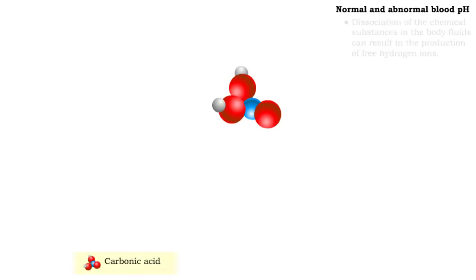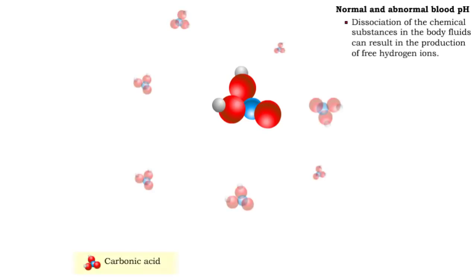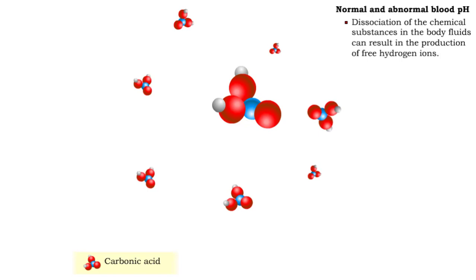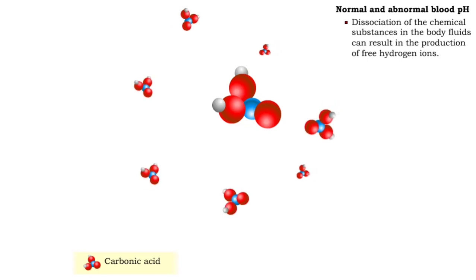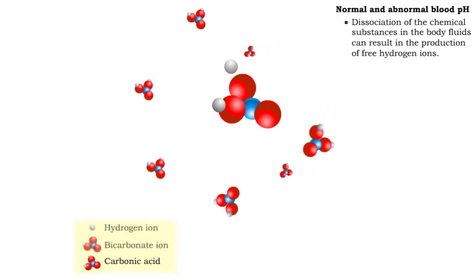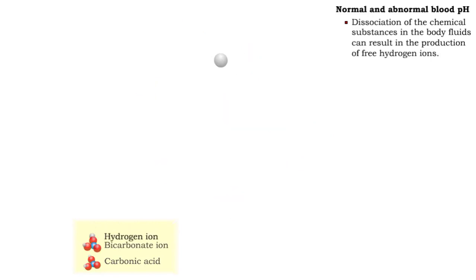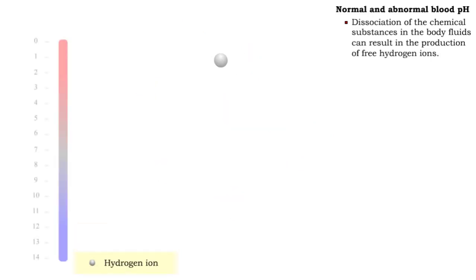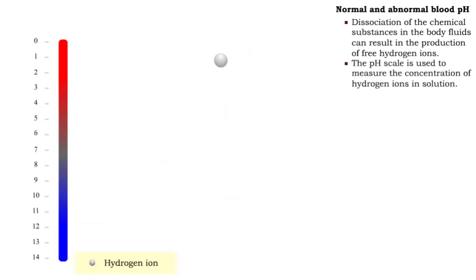Many chemical substances in body fluids dissociate and give rise to free hydrogen ions. The pH scale is used to measure the concentration of hydrogen ions in solution.